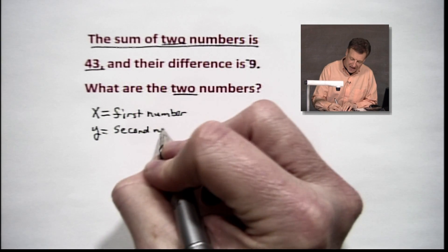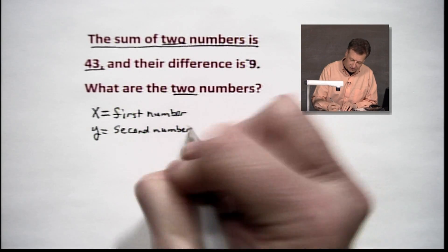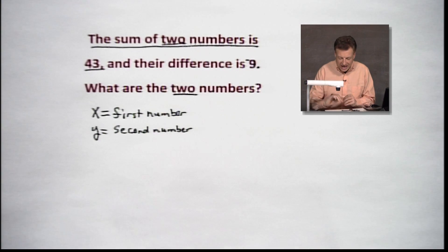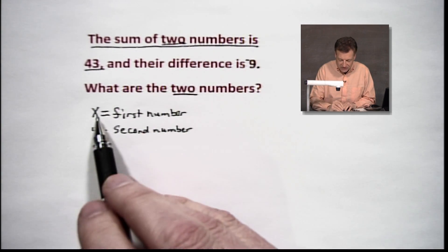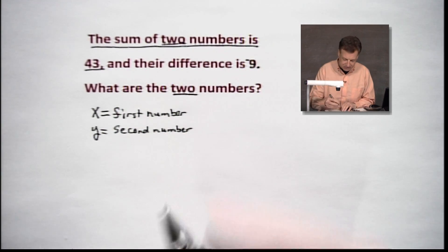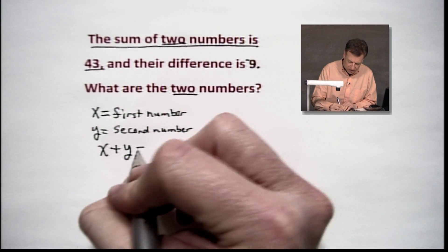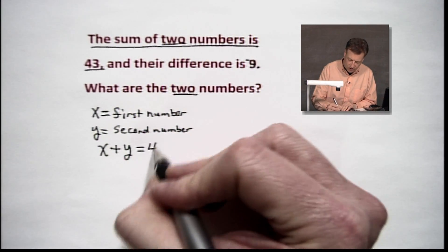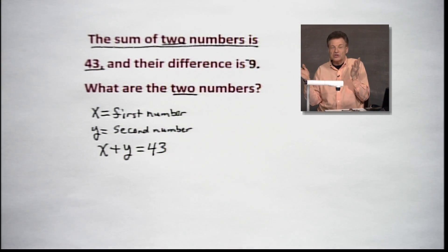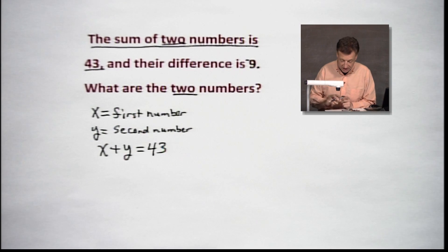In the meantime, we'll think of two ways to relate those. One of them, we're going to add them together. So one method is to add them together. We're going to get X plus Y. And that would equal, according to this, 43. Because that's the first clue we had. Sum. Everybody got it? X plus Y equals 43.